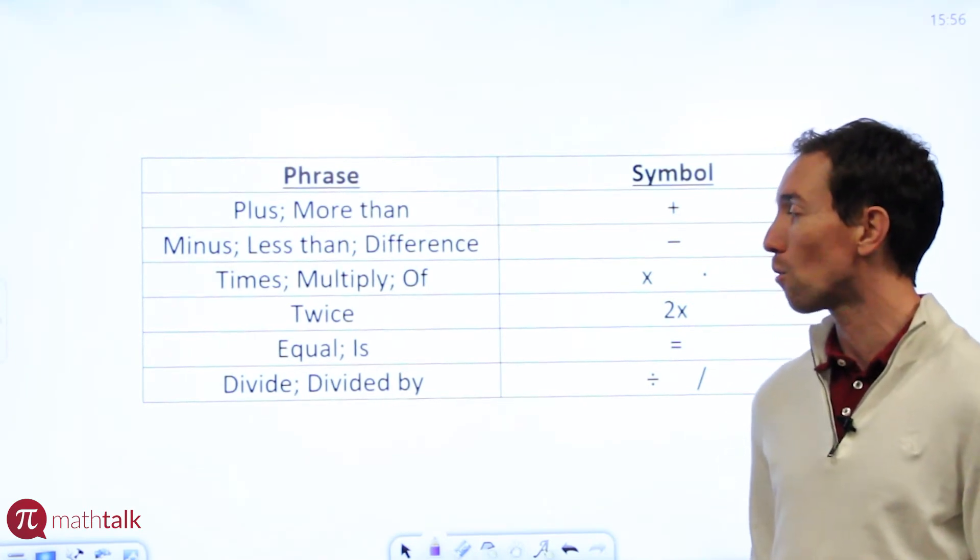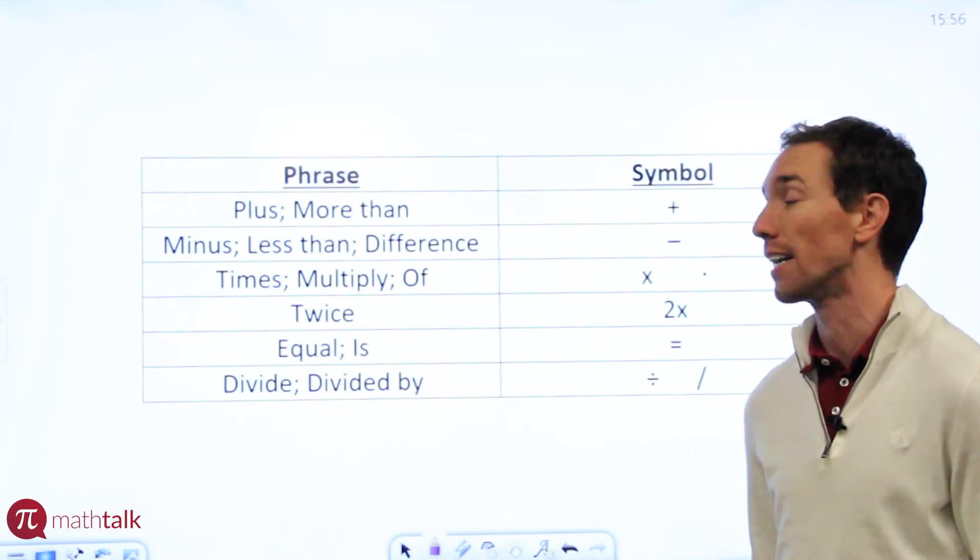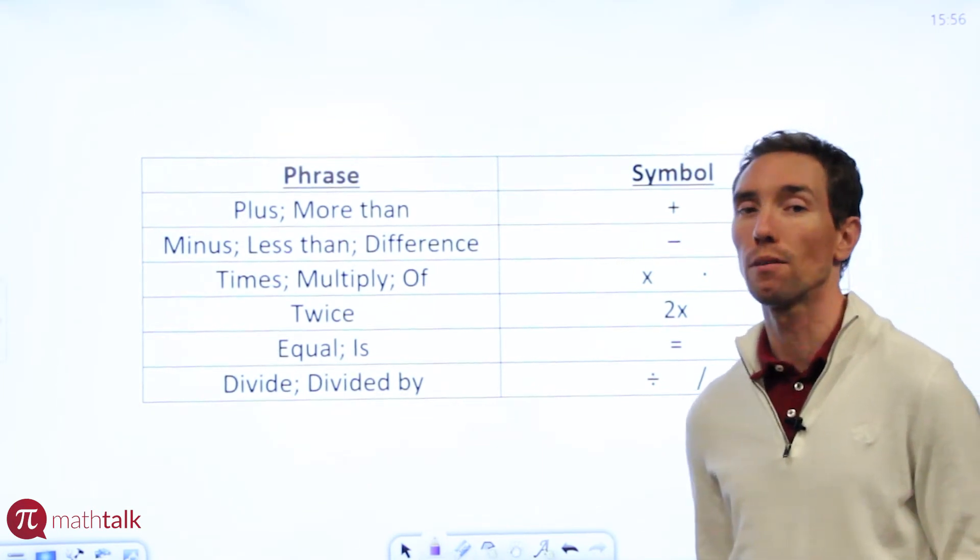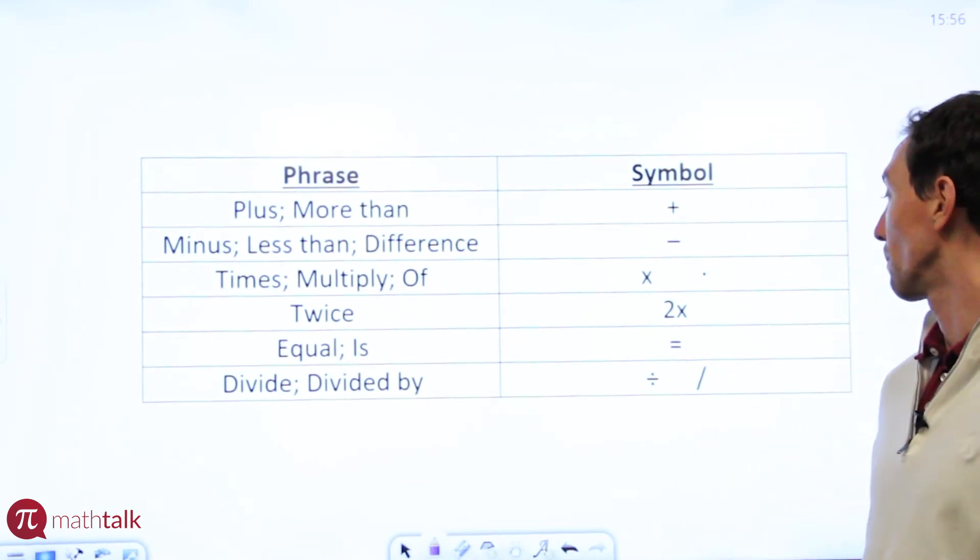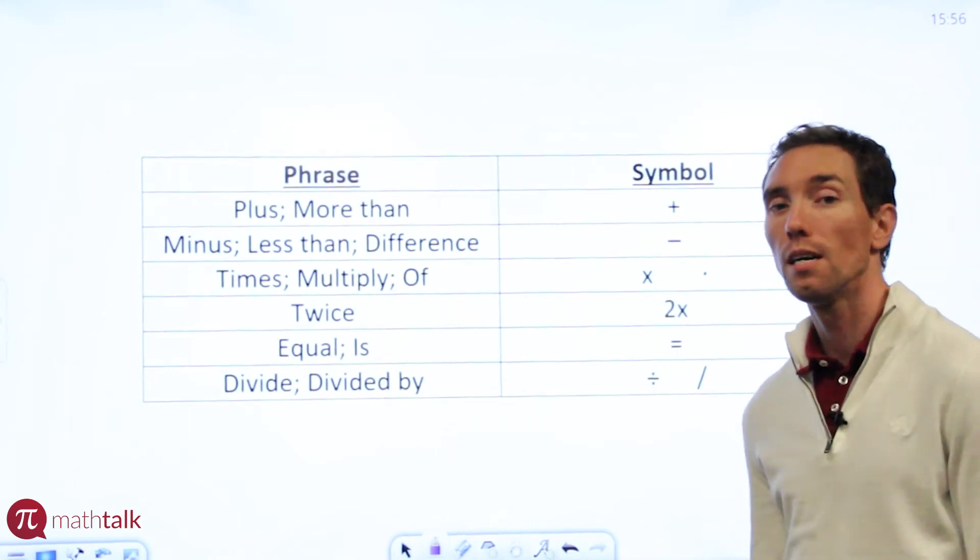If you see the phrase 'equals' or 'is,' that means equal so you're going to use an equal sign. And lastly, if you see the word 'divide,' 'divided by,' or 'divided into,' you're going to use a division sign which can be represented by an actual division symbol or a fraction bar as shown there.